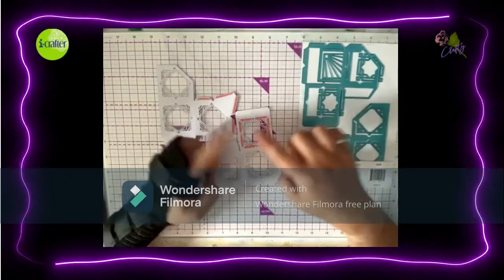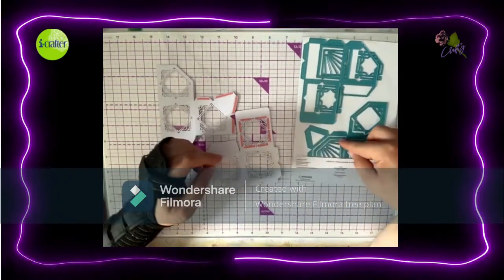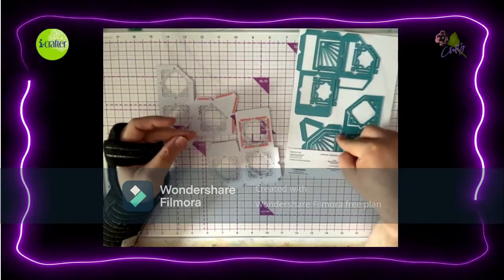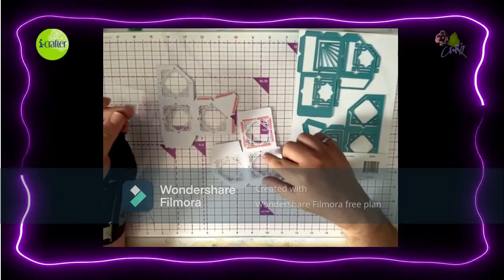The diamond dies and the square dies. Now obviously you can use these for not just the windows but mat and layers as well as I previously did.